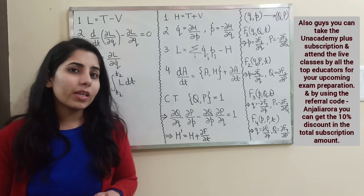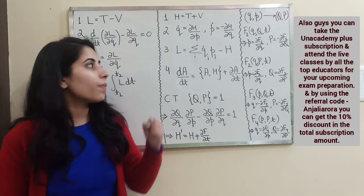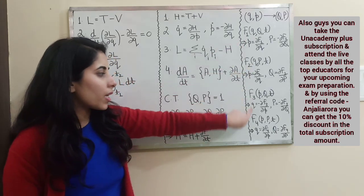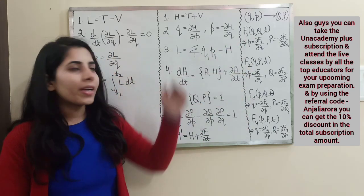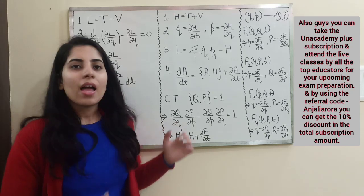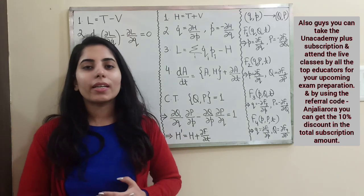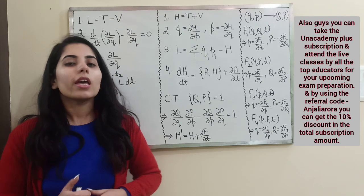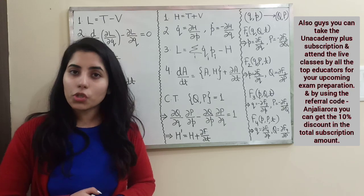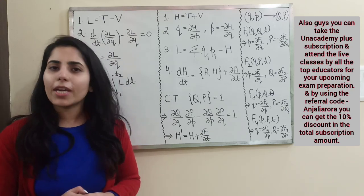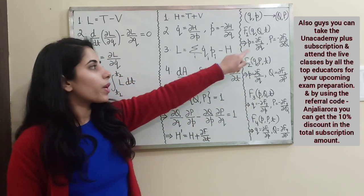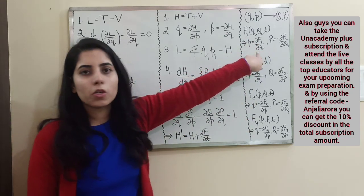There are four different kinds of generating functions: F1, F2, F3, and F4. For memorizing these generating functions there is a trick. I have provided a video on this channel — Mission Net Physics Exam — regarding that trick. You can watch it to understand how the four generating functions and their corresponding expressions are derived.